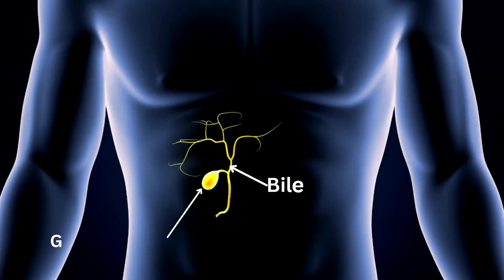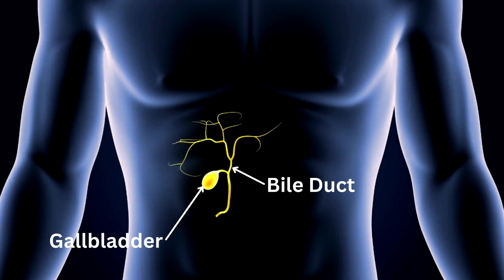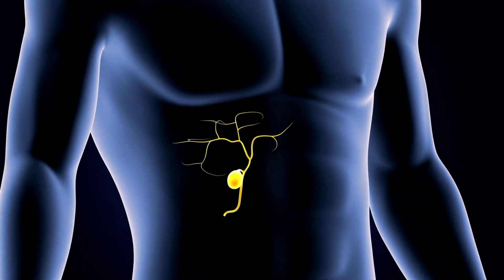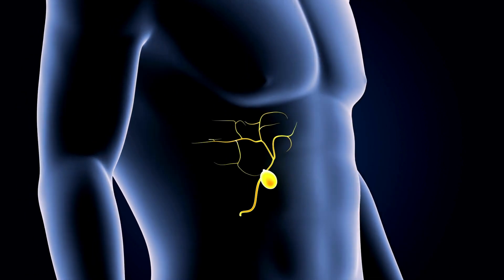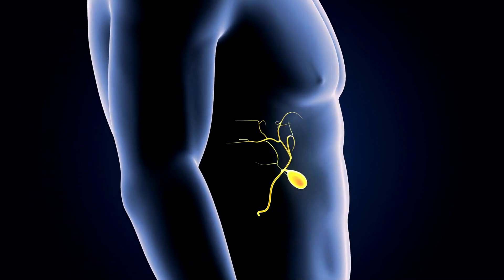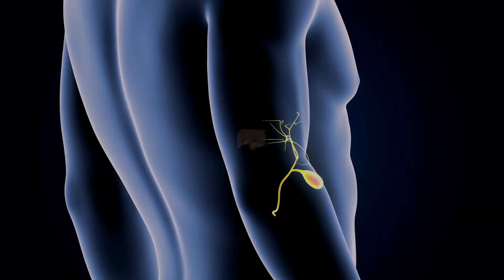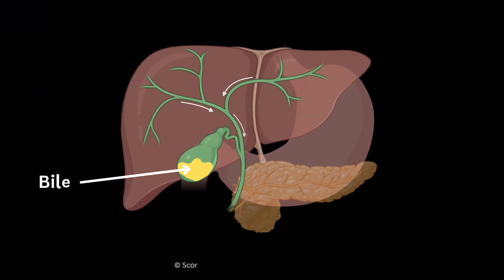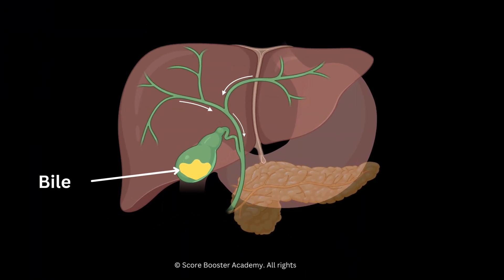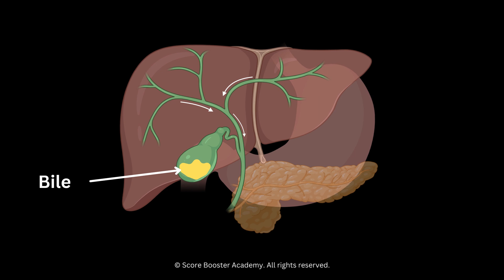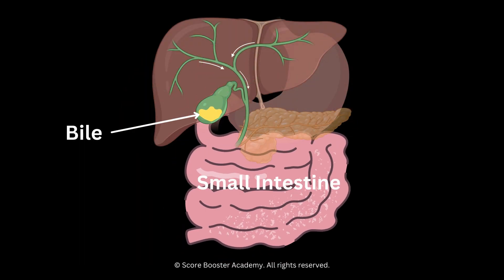Bile ducts transport bile, a yellowish-green fluid produced by the liver, to the gallbladder for storage and later release into the small intestine. Bile aids in the digestion and absorption of fats in the small intestine.